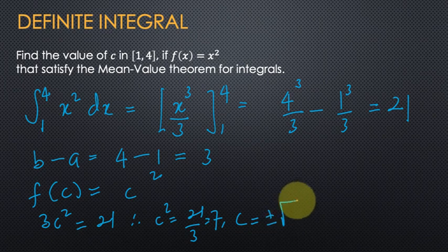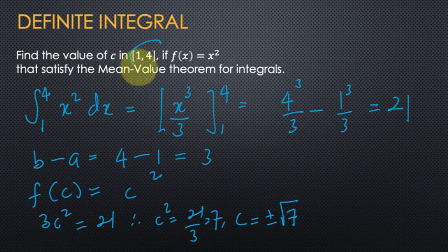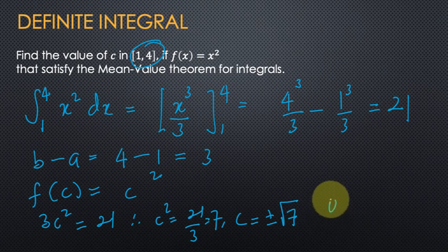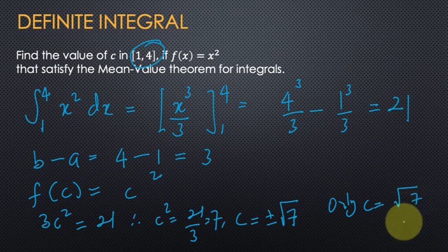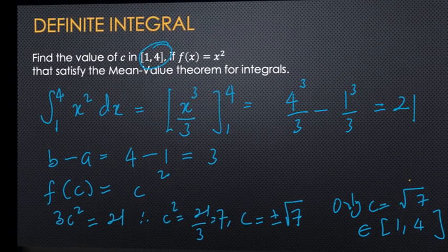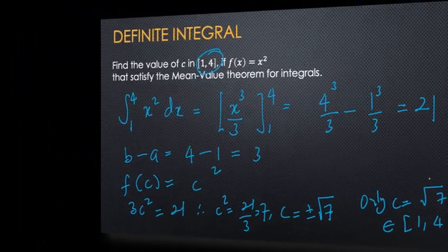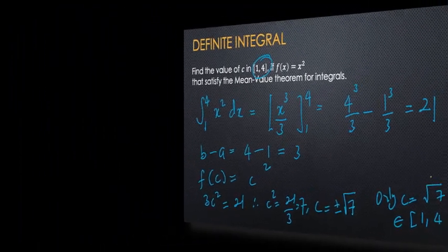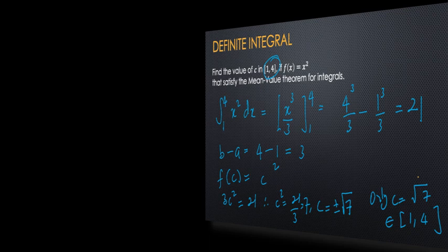So c equals plus or minus the square root of 7. But the interval is [1, 4], so only c equal to the square root of 7 is in [1, 4]. So this is the only answer.